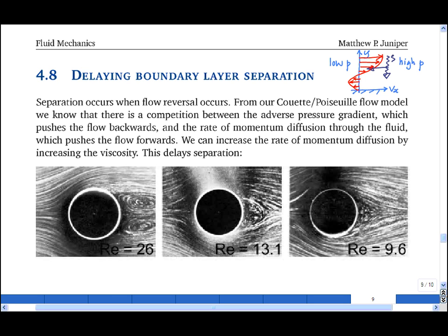However, if we increase the rate of momentum transfer from the free stream into the boundary layer, we can force all the fluid to move forwards and the flow to reattach. One way to do this for a given flow speed is to increase the viscosity of the fluid. When the viscosity increases, the rate of momentum transfer increases.